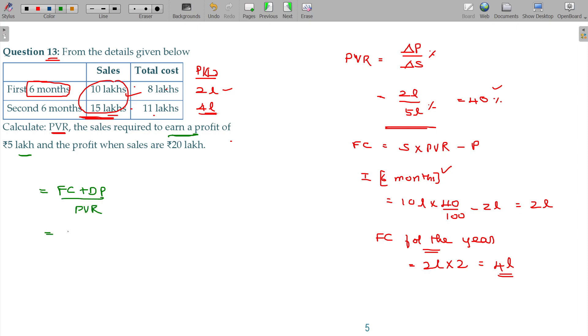4 lakhs plus 5 lakhs divided by PVR here being 40 percentage, which is 22.5 lakhs, that's the answer.